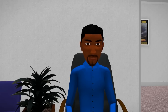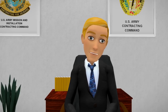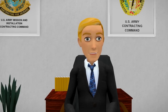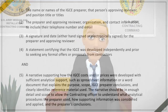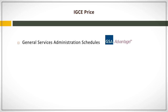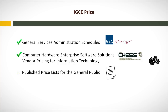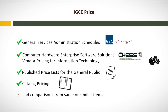For commercial supplies and some commercial services, the requiring activity will most likely determine the market value of an item or service based on market pricing from the results of their market research. The requiring activity may use resources such as General Services Administration schedules, computer hardware enterprise software solutions, vendor pricing for information technology hardware or equipment, published price lists for the general public from individual companies, and catalog pricing and comparisons from same or similar items. This is the most appropriate way to estimate the true value of an item.